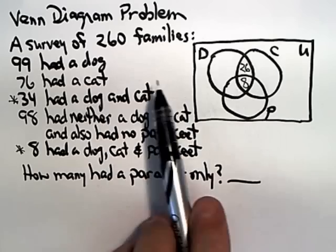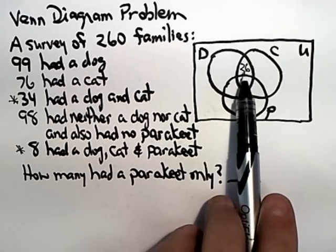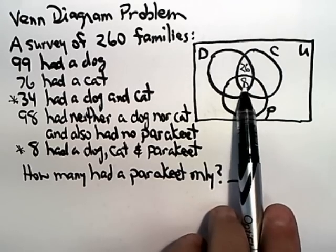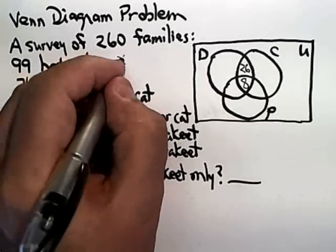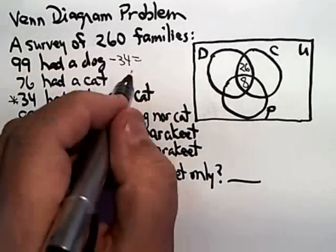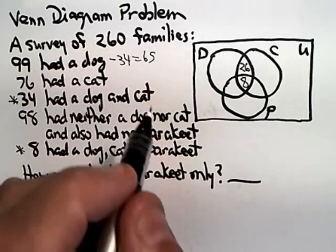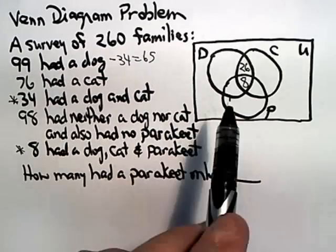So, what I would say is that 99 had a dog, and I've already counted for 26 plus 8 of them. That is 26 plus 8 is 34, so if I've already accounted for 34 of those, that would leave 65 in the dog region.